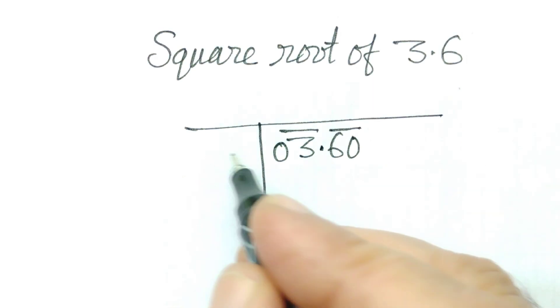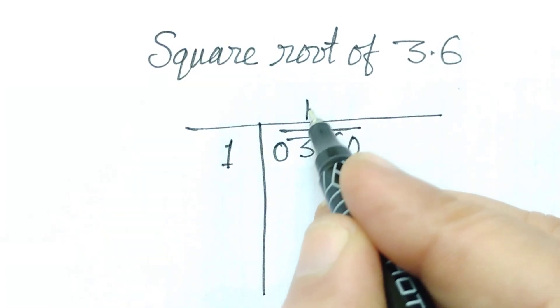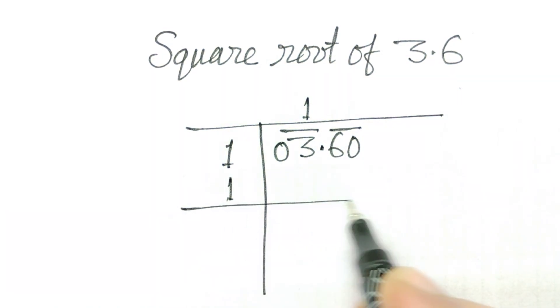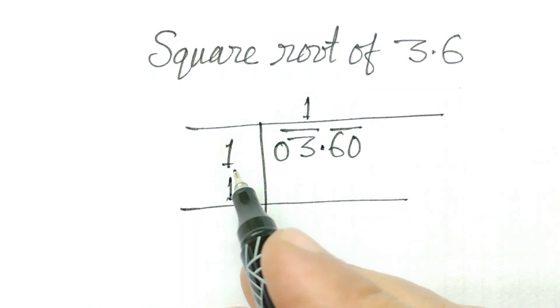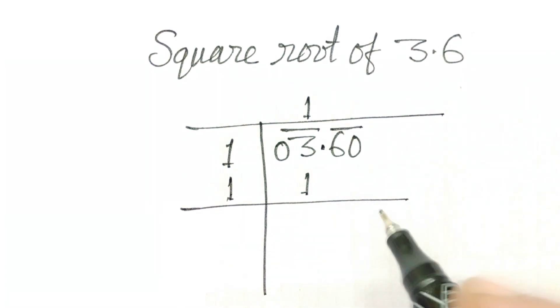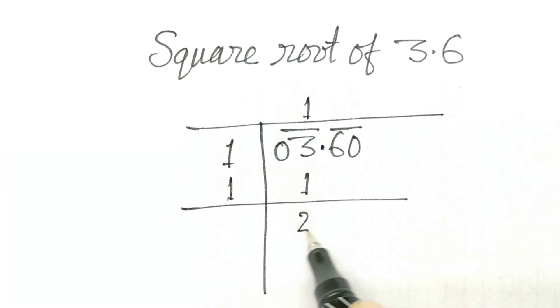Now, 1 as divisor. 1, 1 time. Here, 1. Now, 1 and 1 multiplication 1. Now, 3 minus 1, 2.